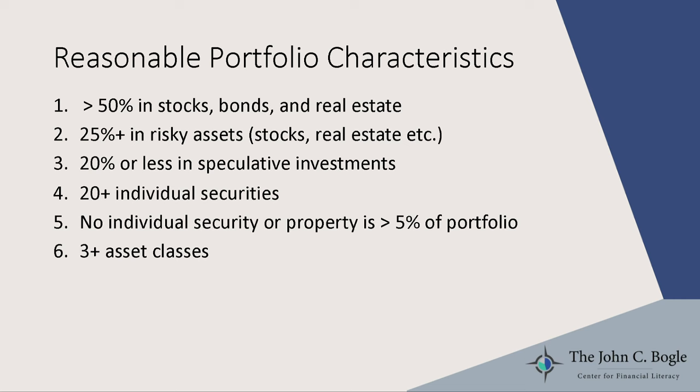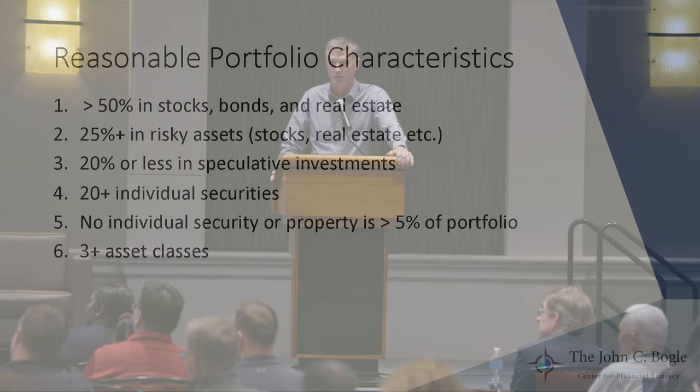If there's a slide to remember, it's this one. A reasonable portfolio will have at least 50 percent of its assets in stocks, bonds, and real estate — not wacky stuff. Stocks, bonds, and real estate should be the majority. At least 25 percent needs to be in risky assets; if not, it's unlikely to keep up with inflation or reach your goals. If you only invest in safe stuff, you'd need to save roughly 50 percent of your gross income for 30 years to retire comfortably. You want 20 percent or less in speculative investments. Have at least 20 individual securities — buying a total stock market index gives you 4,000 securities in 30 seconds. No individual security or property should be more than 5 percent of your portfolio.